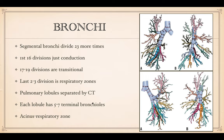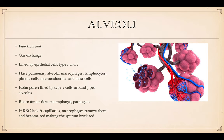The pulmonary lobules are separated by connective tissue. Those lobules will have five to seven terminal bronchioles, and below the bronchioles is the acinus or the respiratory zone. Part of the acinus is the alveoli, which are the functional units — the ones actually playing a role in gas exchange.